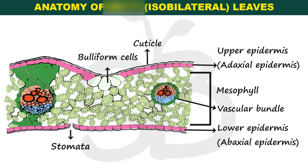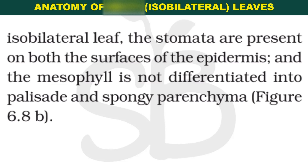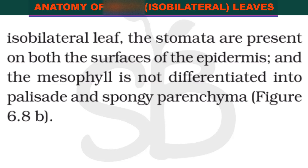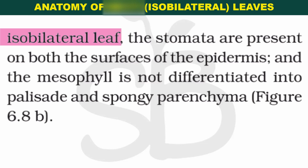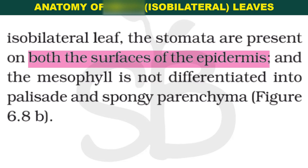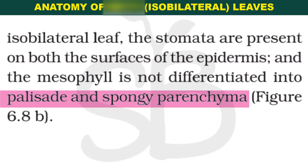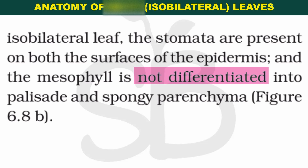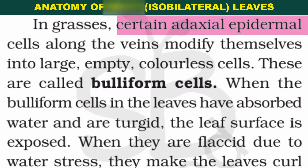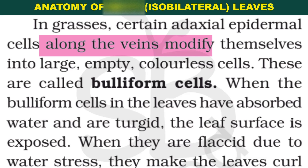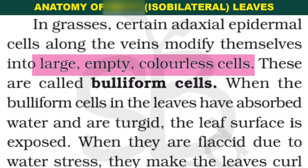To summarize, we discussed the monocot leaf in anatomical characters. The monocot leaf is an isobilateral leaf with upper and lower epidermis. Mesophyll cells are not differentiated into palisade and spongy parenchyma. The adaxial epidermal cells are modified along the veins into large, empty, colorless cells called bulliform cells.